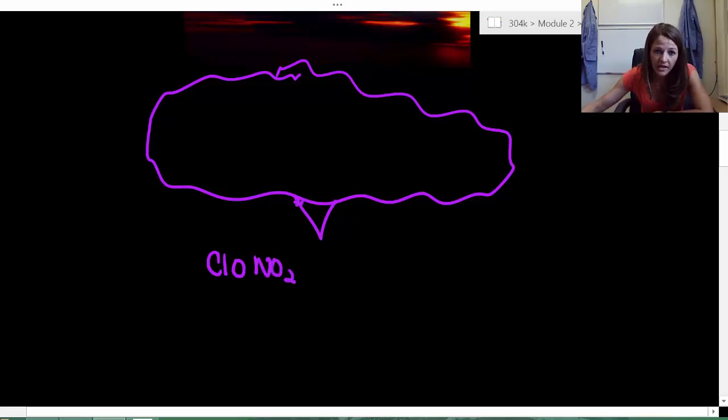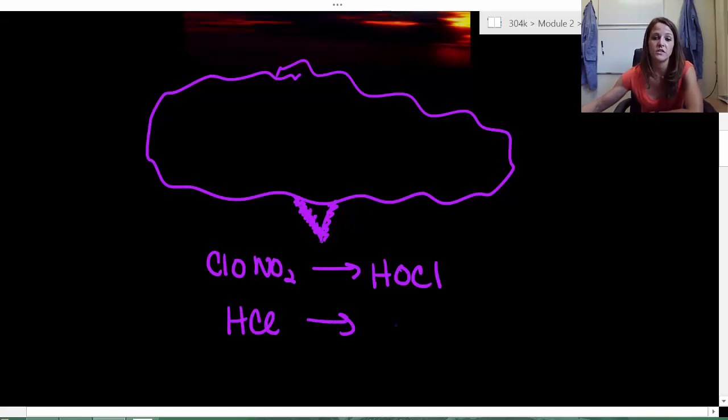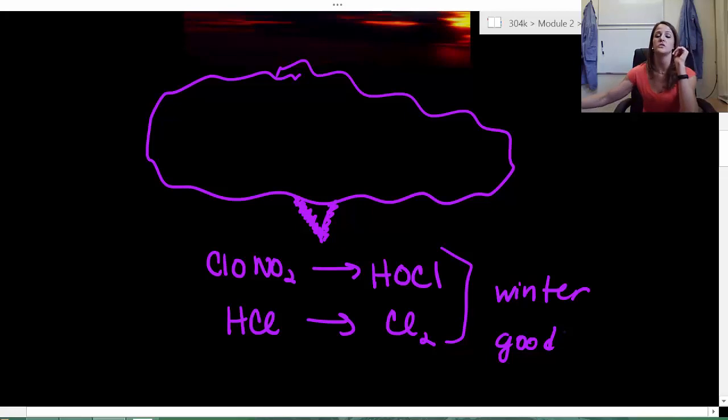Now, when that comes here and it interacts with the outside of these tiny ice crystals, what happens is they break apart into HOCl. No big deal. That's a fine chemical. We have no problem with it. The same thing happens with HCl. It comes in, again, interacts with these ice crystals and breaks apart into chlorine gas. Both of these fine in our stratosphere in the winter. No problems. I mean, absolutely no problems. They're good. No issues.